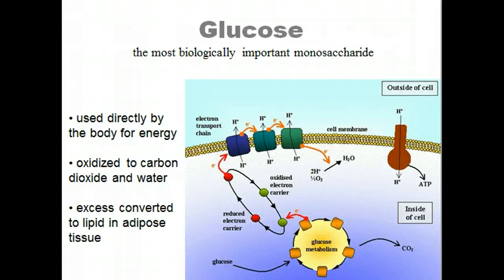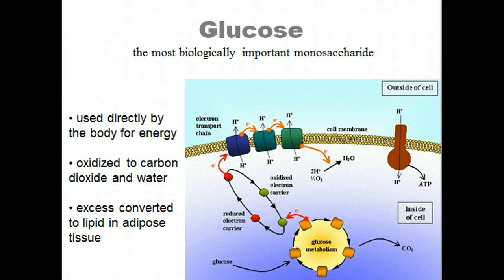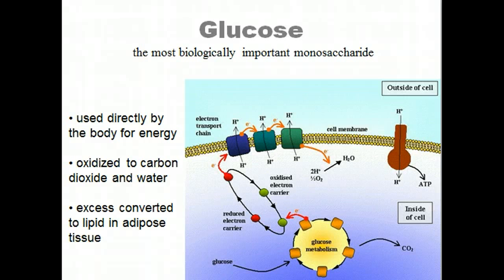Glucose metabolism provides energy by going through glycolysis and then through oxidative phosphorylation. Along with glucose, there are other important monosaccharides. Galactose is a component of the disaccharide lactose, found in many plant gums and pectins. Fructose is a component of the disaccharide sucrose and is the sweetest of all the naturally occurring sugars, found in honey and fruits. Lactose is composed of galactose and glucose and is a major component in mammalian milk. Modern diets have increased the consumption of fructose as an additive at the expense of complex carbohydrates.